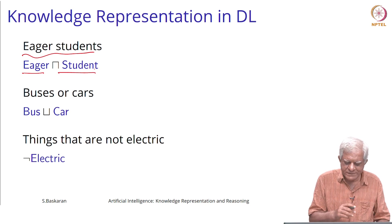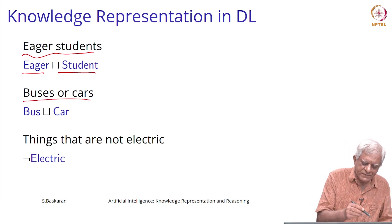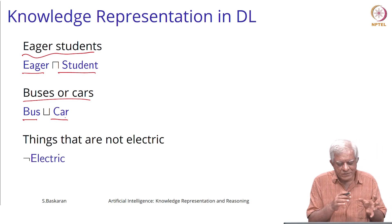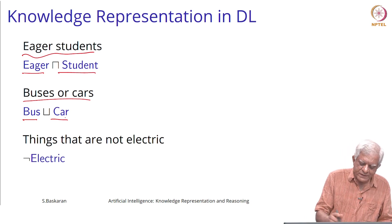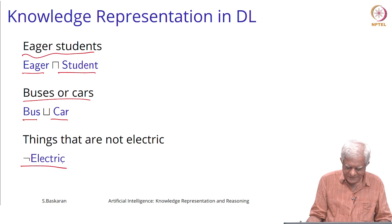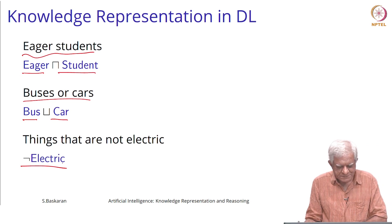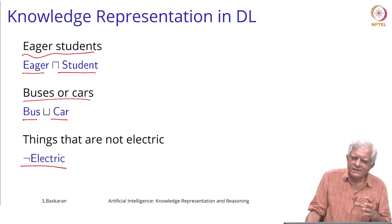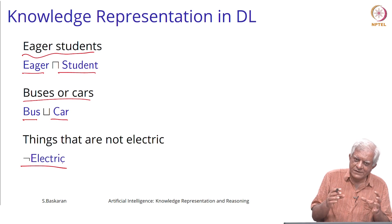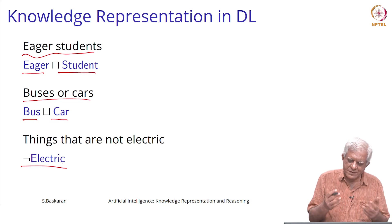That intersection concept can be extended. For union, 'buses or cars' can be defined if we have the concept of bus and the concept of car, then we can define a concept 'buses or car'. If we have things which are electric, we can say 'not electric' as the complement. This is semantic in the sense that we are defining primitive concepts and then defining new concepts from primitive concepts.